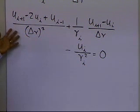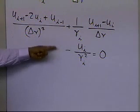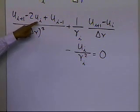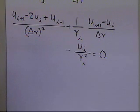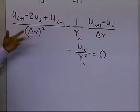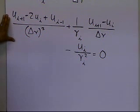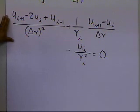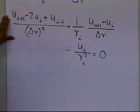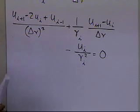At node i there are three unknowns — u_{i+1}, u_i, and u_{i−1} — so you need multiple equations. We will write this equation at nodes 2 and 3, since we already know the values at nodes 1 and 4 from the boundary conditions. Writing the equation at nodes 2 and 3 gives us two equations, and with the known boundary values, we effectively have a solvable system.